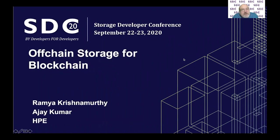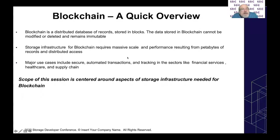The first talk in this track is the off-chain storage for blockchain talk by Ramya Krishnamurthy and Ajay Kumar from HPE. They do a quick overview of blockchain itself as a distributed database of records stored in blocks. The data stored in a blockchain cannot be modified or deleted and remains immutable. The storage infrastructure for blockchain requires massive scale and performance resulting from petabytes of records and distributed access.